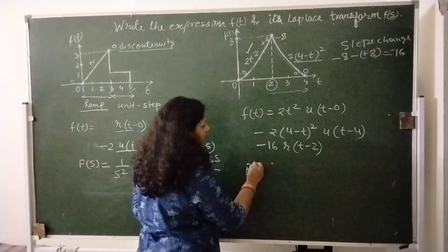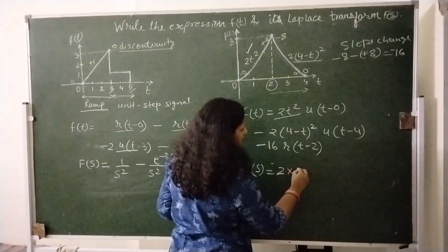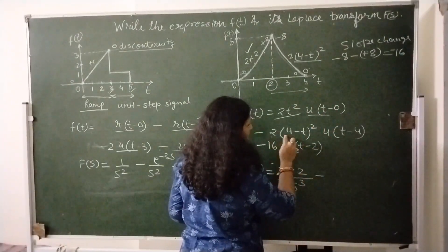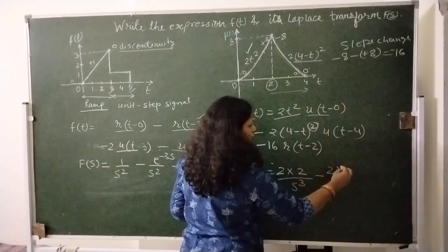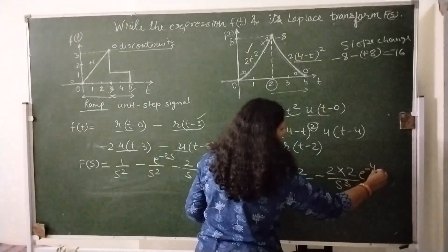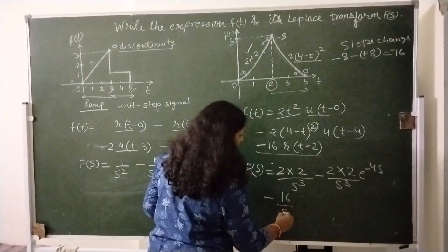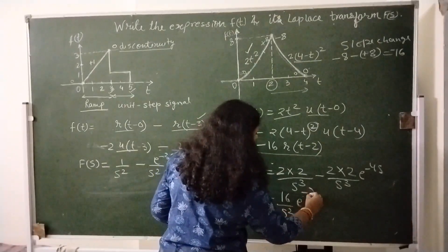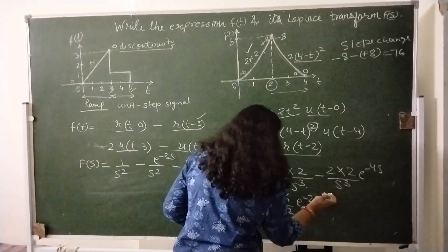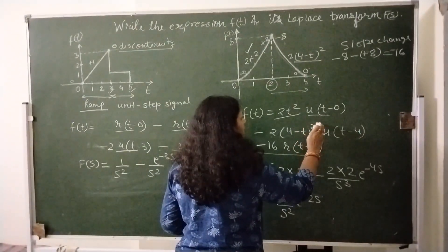Now find the Laplace transform. For 2t², write 2 as it is; for t² the Laplace is factorial 2 divided by s³, giving 2·(2/s³). Then minus 2·(2/s³)·e^(−4s) for the second parabolic term. Then the ramp term gives minus 16/s²·e^(−2s). This is our Laplace transform expression and the expression in terms of t for the given curves.